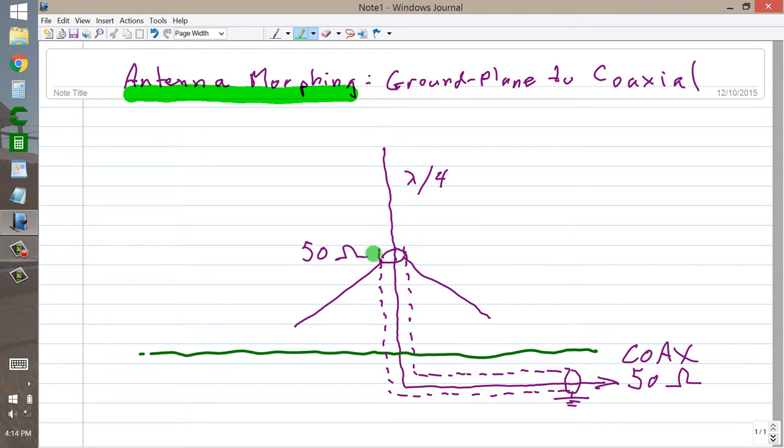As you increase the droop, the feed point impedance remains purely resistive, but increases gradually, and at a certain point, I'm not sure if it's exactly a 45 degree droop, it will pass the 50 ohm point, in which case you'll have a perfect 1 to 1 standing wave ratio on your feed line.